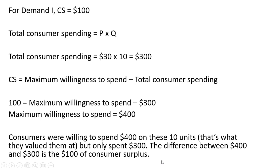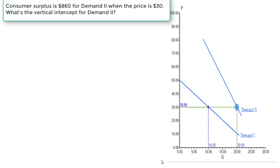Let's move on to Problem 2. Consumer surplus, we're told, is $860 for Demand Curve 2. What is the vertical intercept for Demand Curve 2? Where does this demand curve touch the vertical axis, or sometimes called the demand choke price?